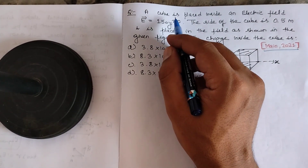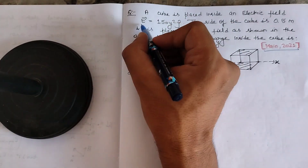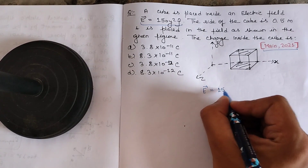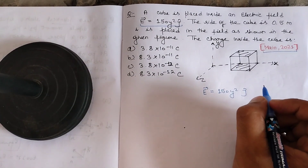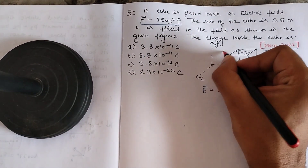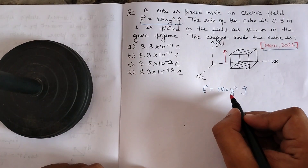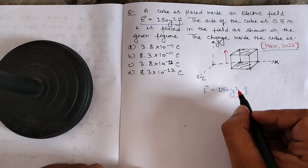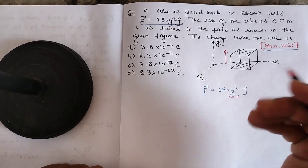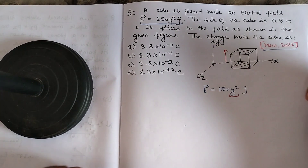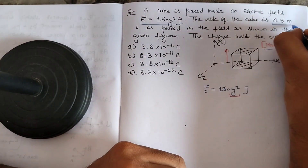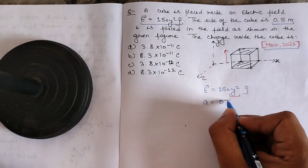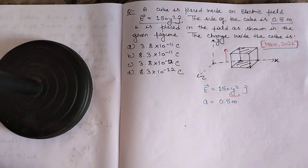The statement of the problem is: a cube is placed inside an electric field. We have been given an electric field that is 150y²ĵ. This electric field is in the y direction and, if we look carefully, this electric field is not constant — it is a quadratic function of y, meaning the magnitude of the electric field is increasing as we go in the y direction. The side of the cube is 0.5 meter, and it is placed in the field as shown in the figure.